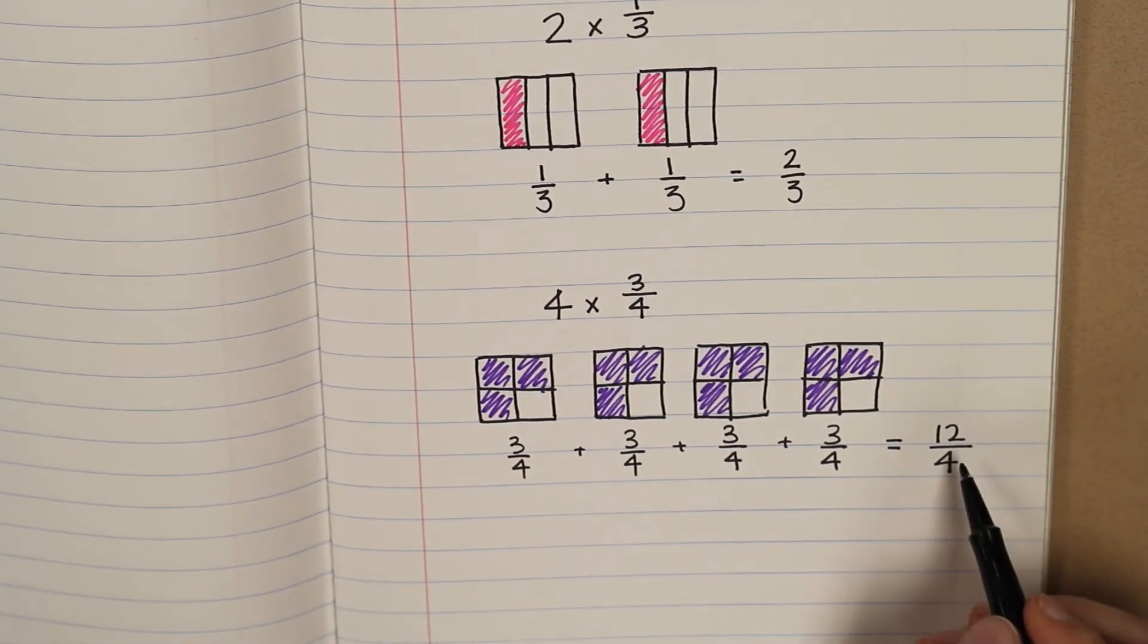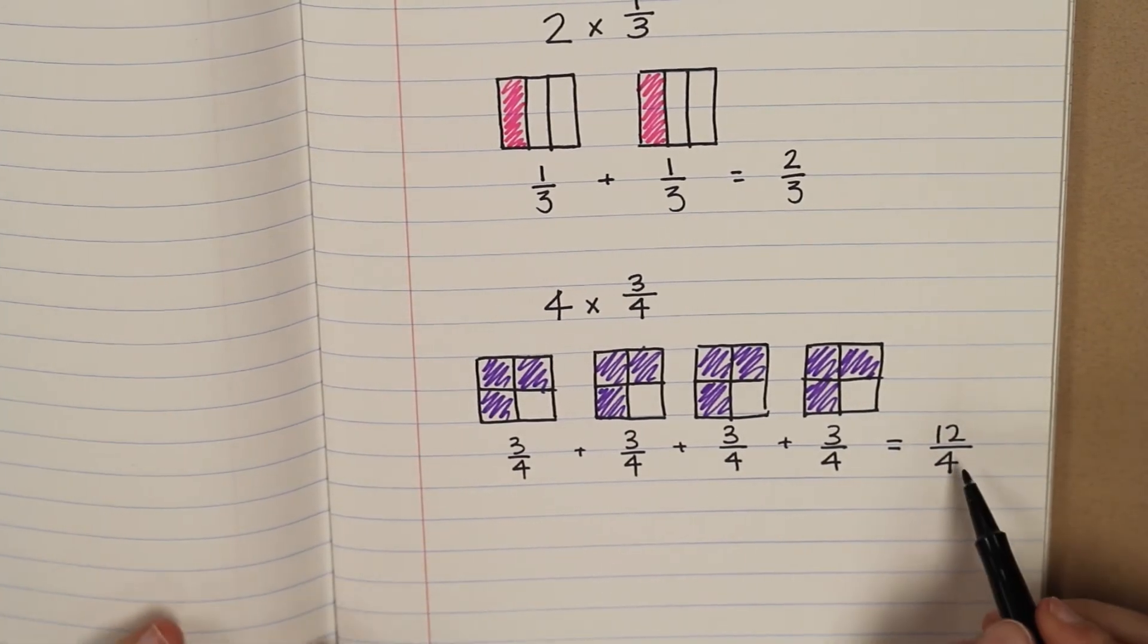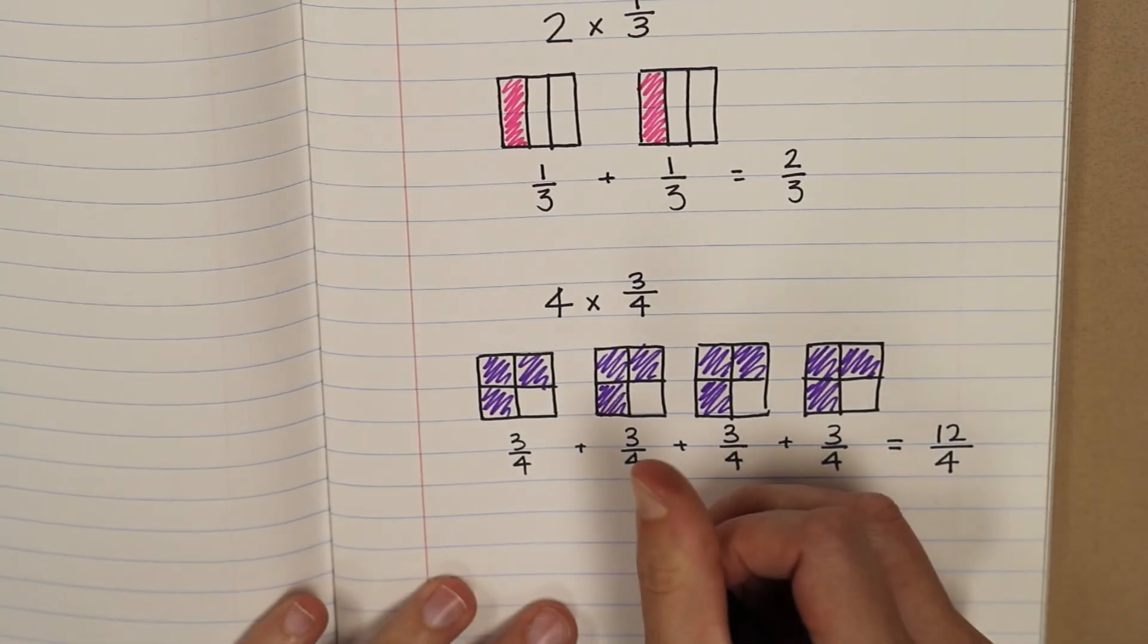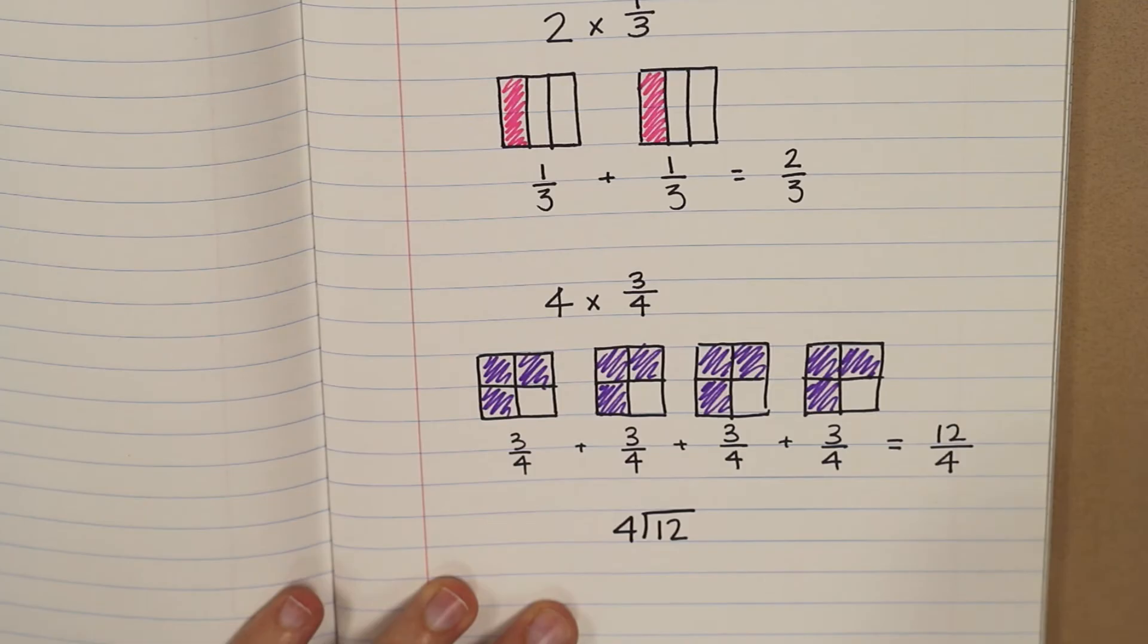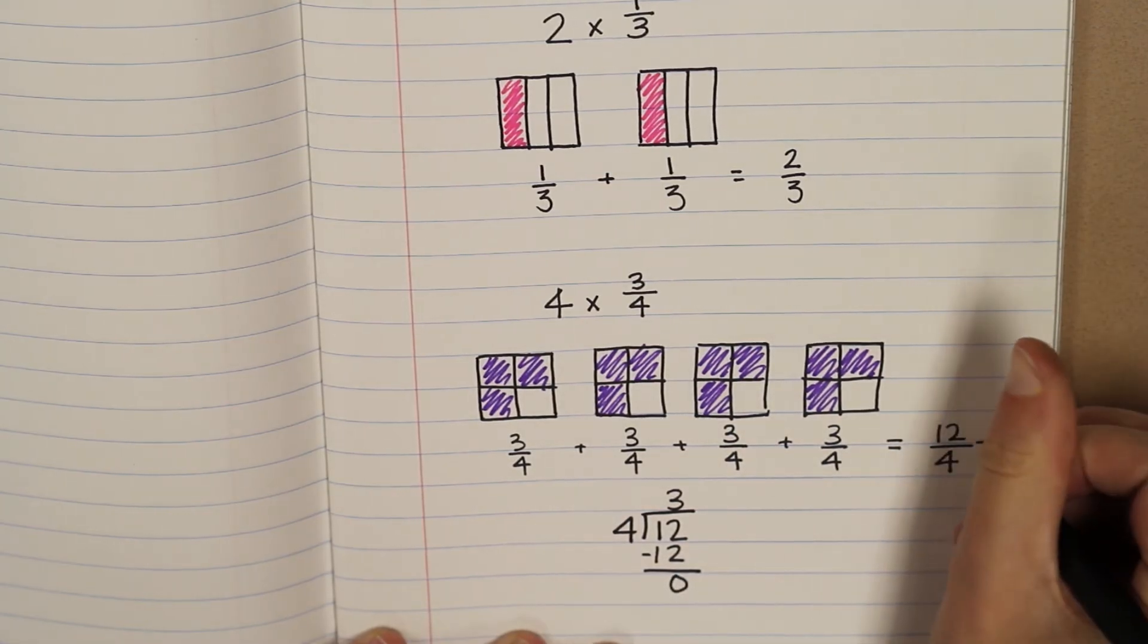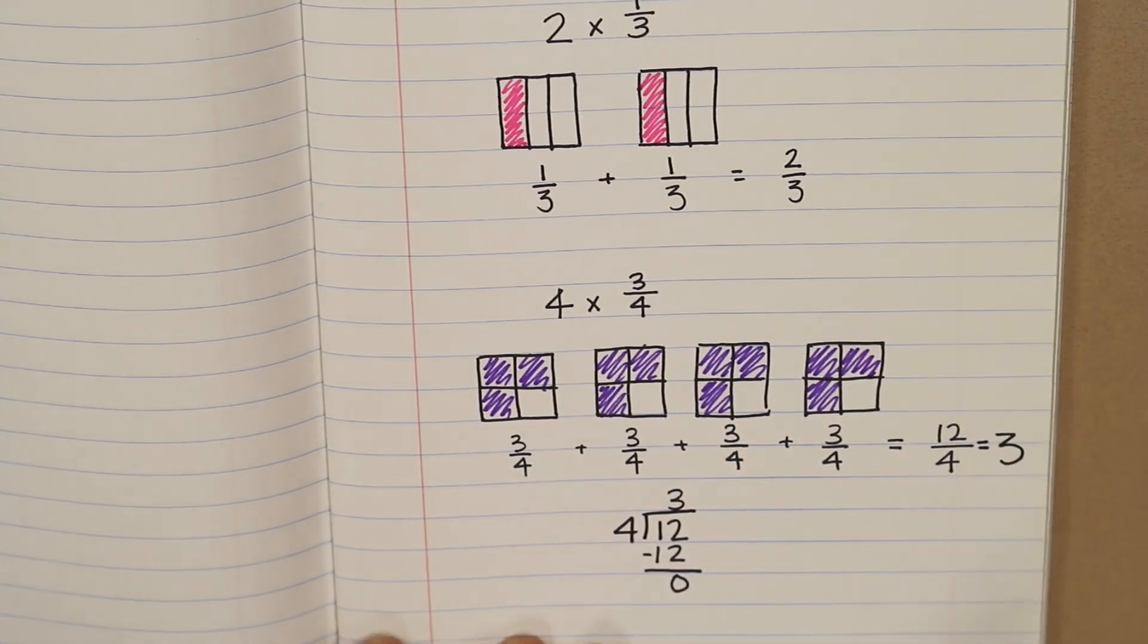Now, if you get an improper fraction, remember you need to be able to turn this into a mixed number, or sometimes it even turns into a whole number. You can use division to turn this into a mixed number. In this case, you end up with exactly three. So twelve-fourths equals three wholes.